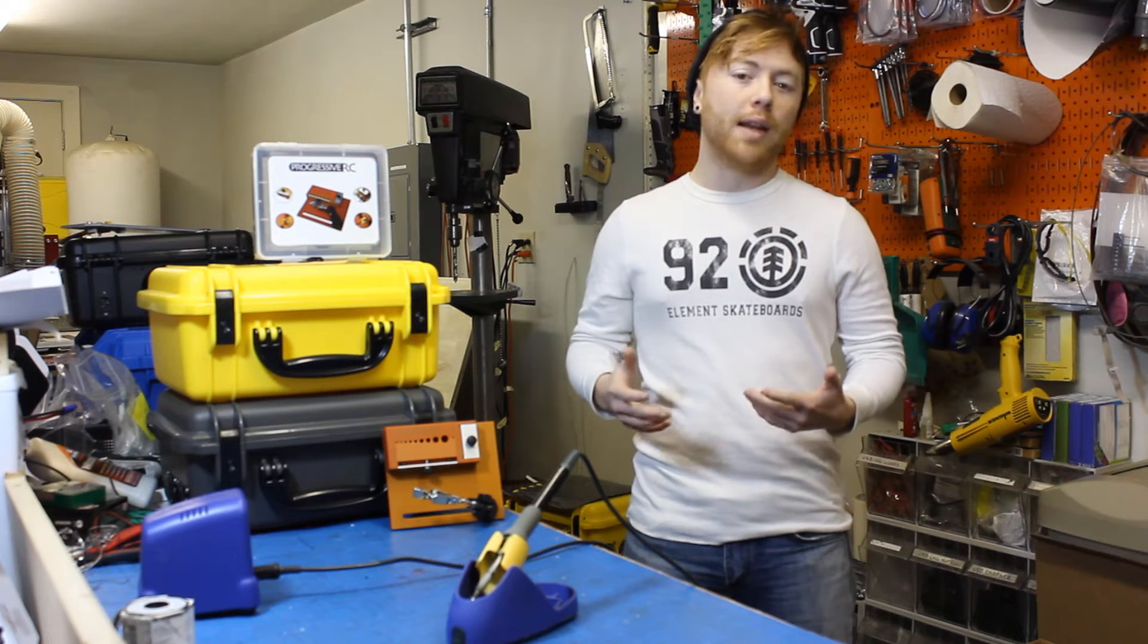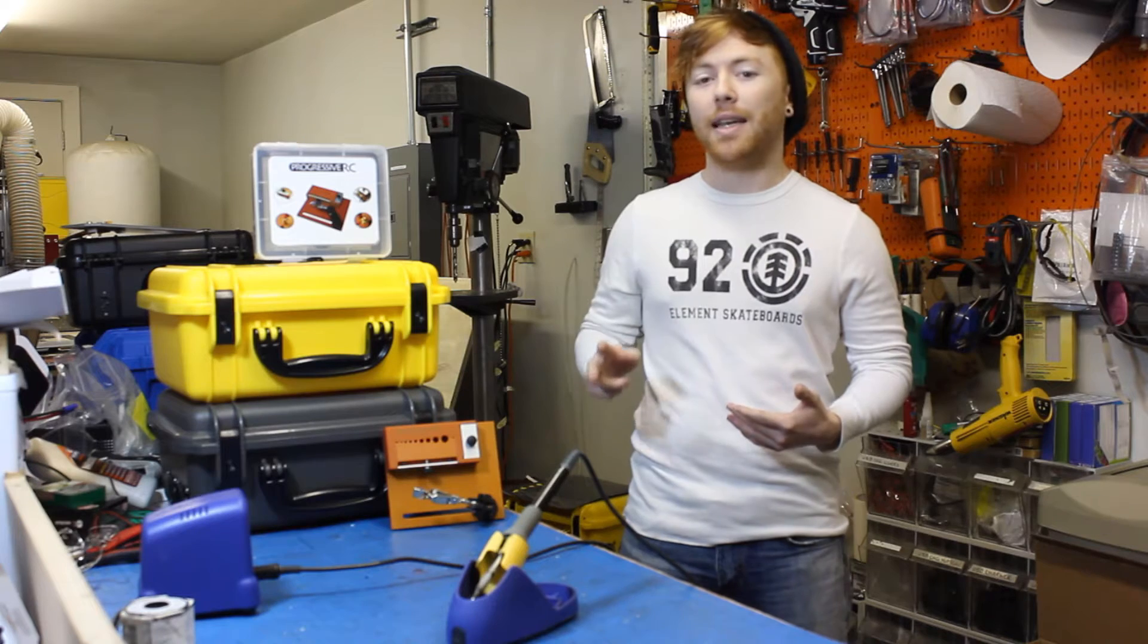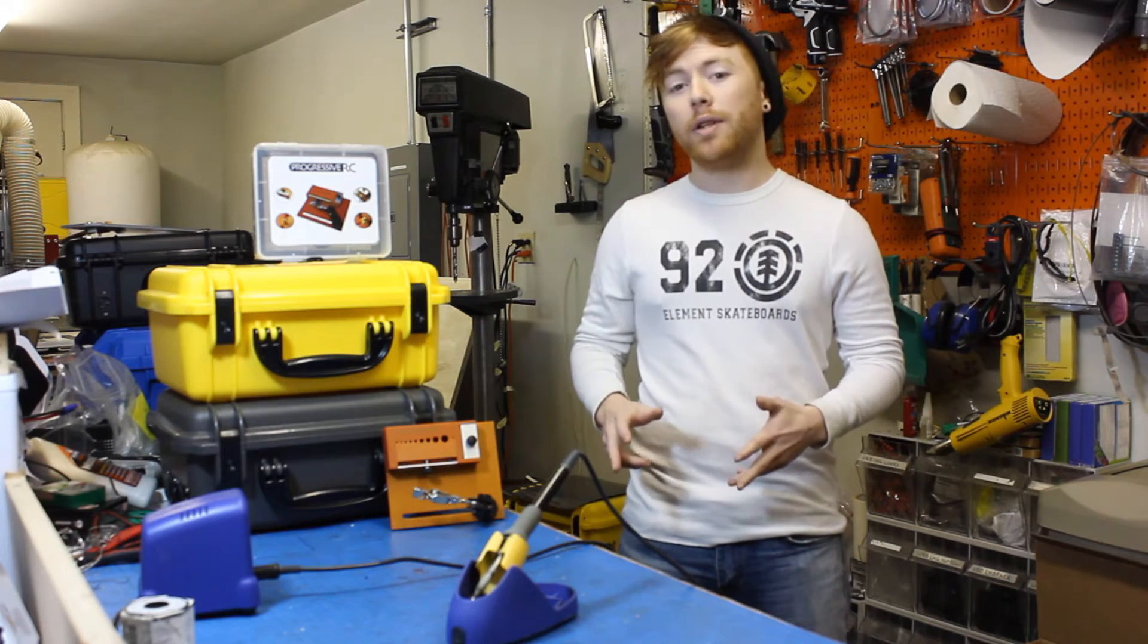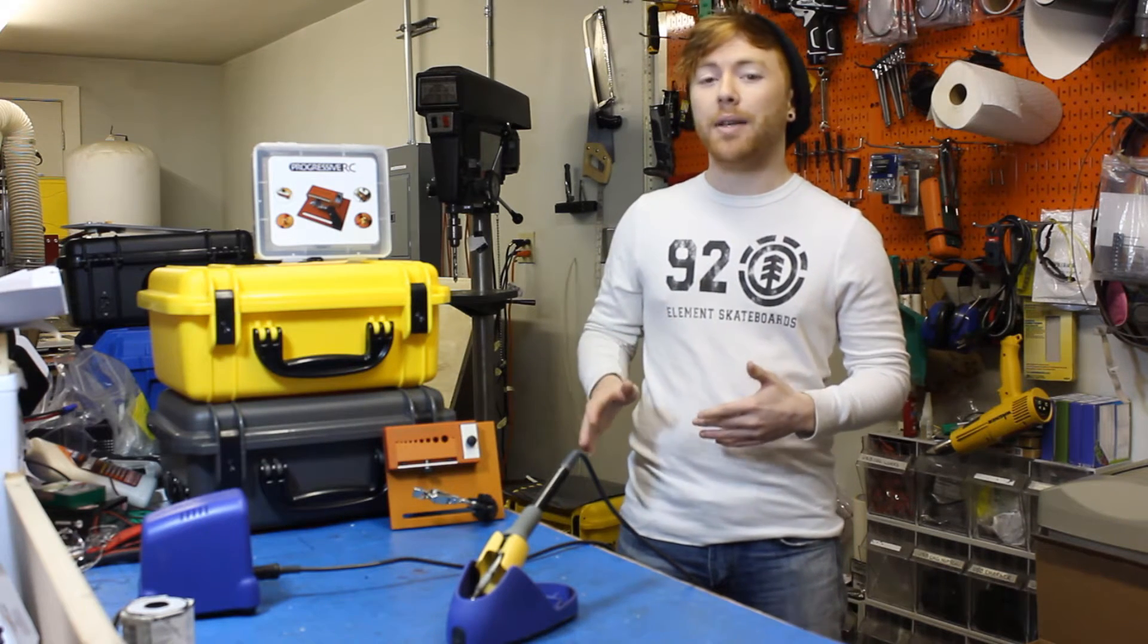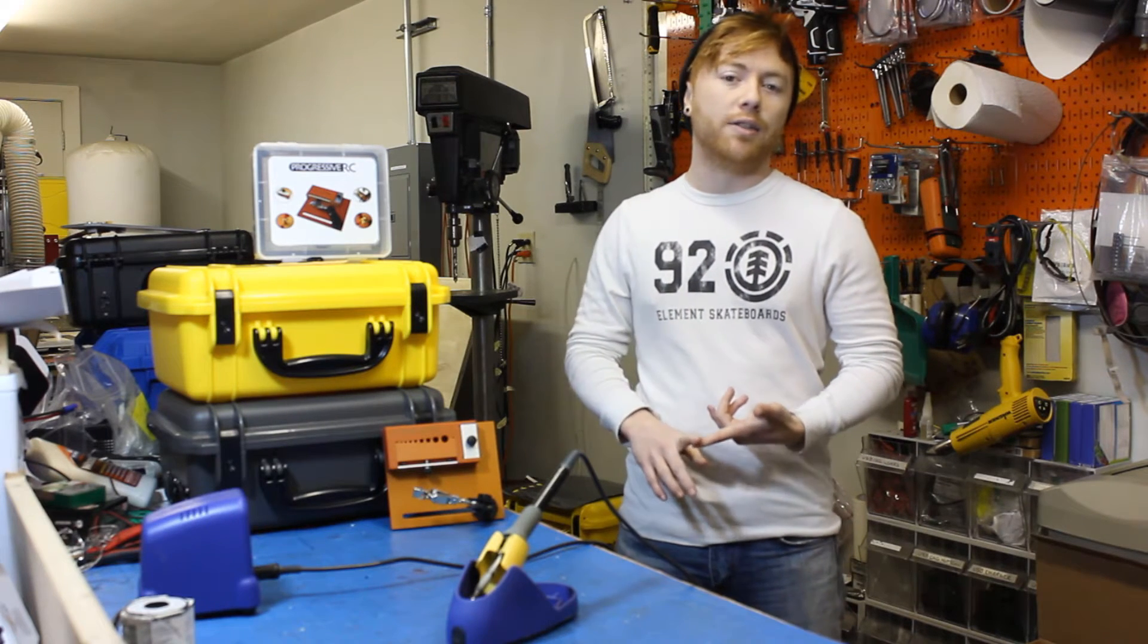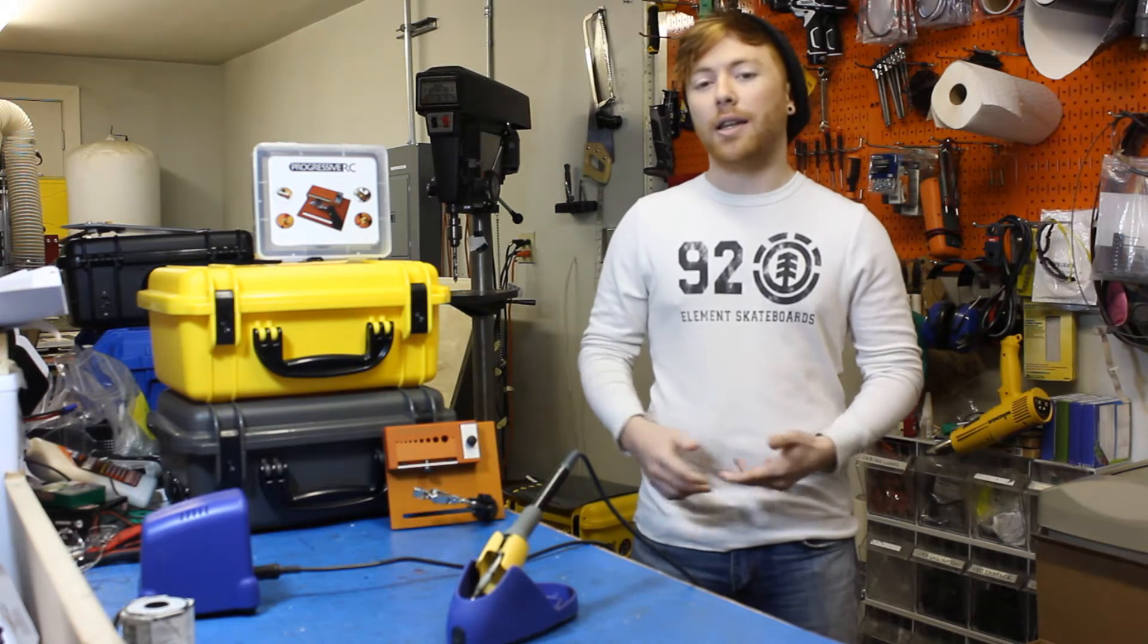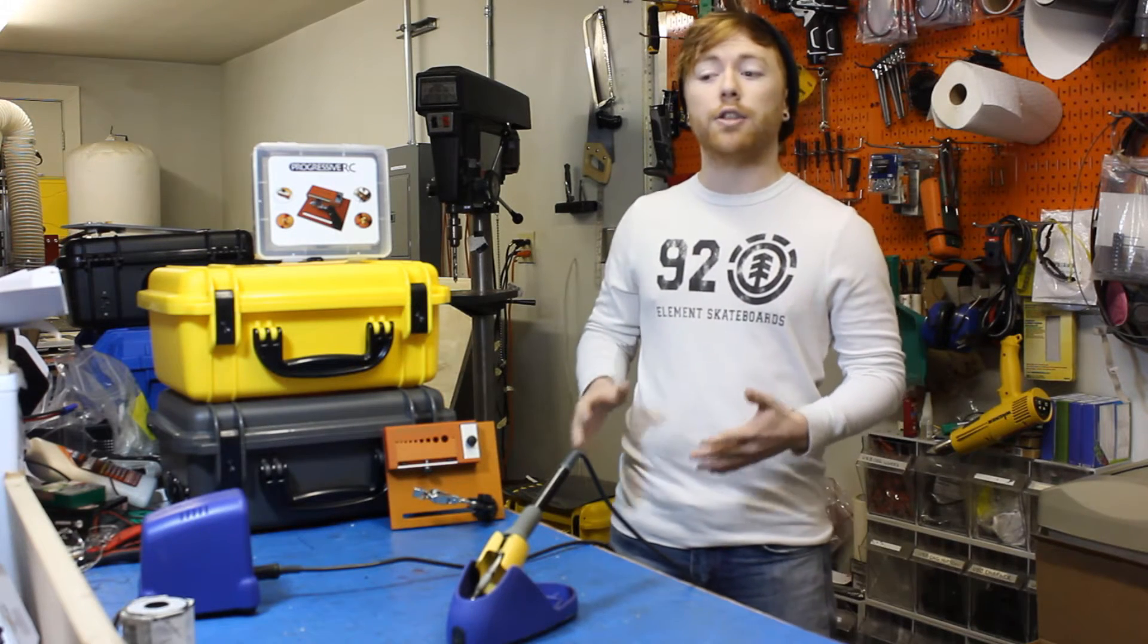If you don't have a soldering iron already, look for one that has adjustable temperature and a tip that has a coating on it. It's really important to make sure your tip has a coating because if you buy some cheap one that doesn't have that coating, it's going to get oxidized really fast and be eaten away by solder and heat, and it's not going to last very long and will be really hard to solder with.